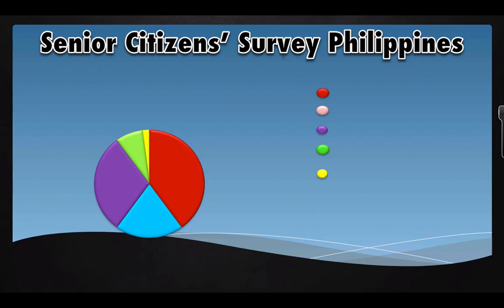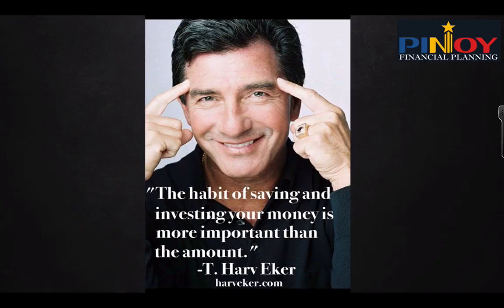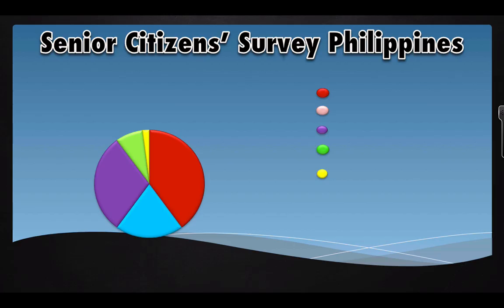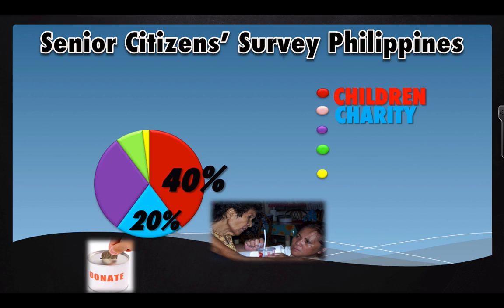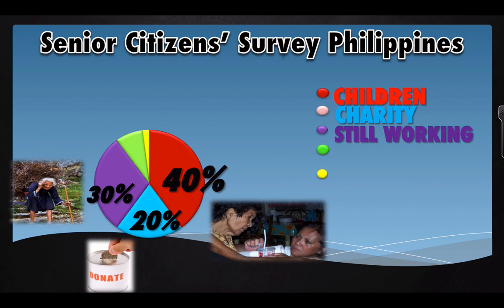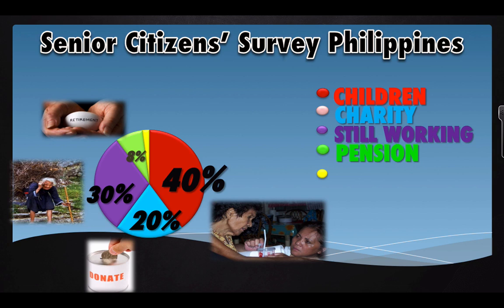The habit of saving and investing is more important than the amount. Start now and build that habit. According to Brother Bo's book 'Eight Secrets of the Truly Rich,' a survey of senior citizens in the Philippines found that 40% depend on their children, 20% depend on charity, and 30% are still working because they can't afford to retire. Only 8% depend on pension — and the pension is often just 3,000 pesos a month, which is not enough especially with ongoing medical expenses.